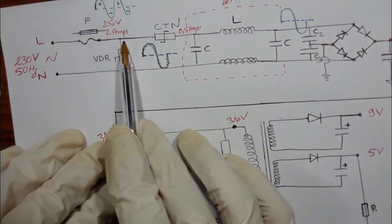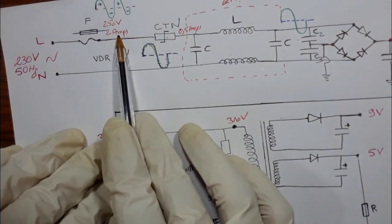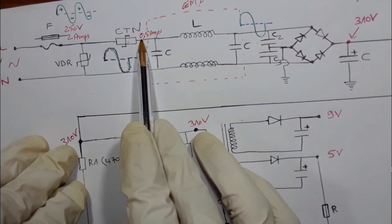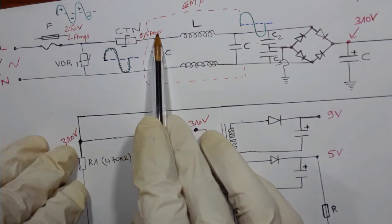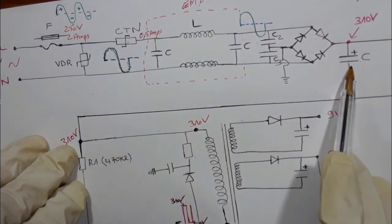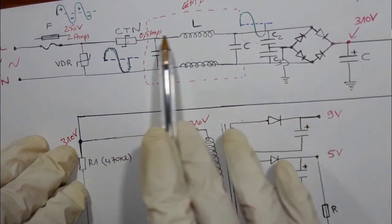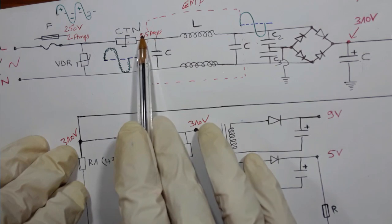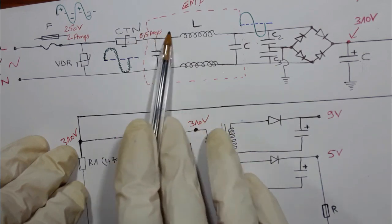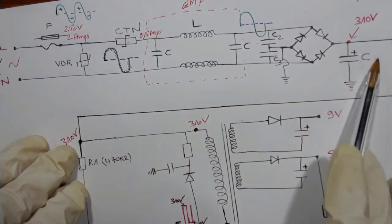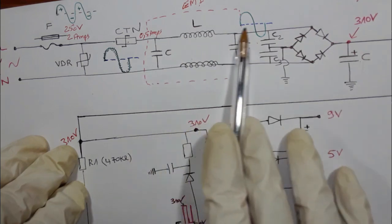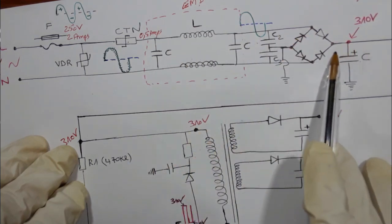For example, if we have 2 or 5 amps, the NTC will limit it to just 0.5 amps the first time current passes to this capacitor, gradually allowing more current — 1.5 amps etc. — in order to protect the electrolytic capacitor.